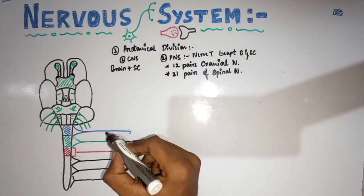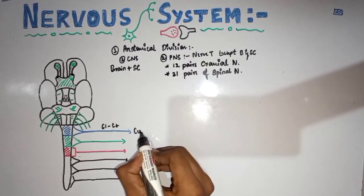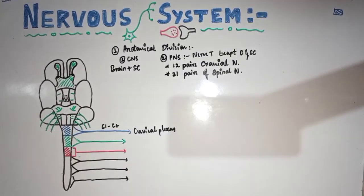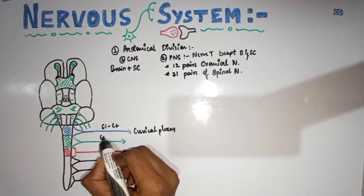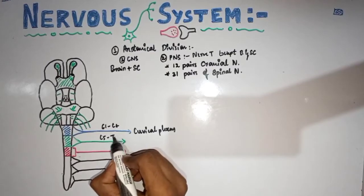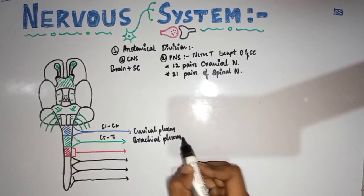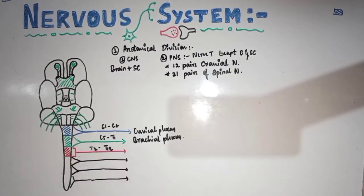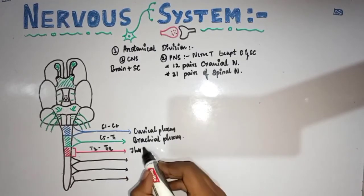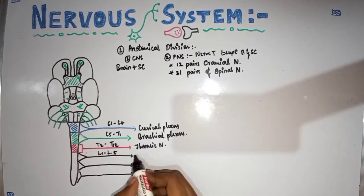From C1 to C4, spinal nerves form the cervical plexus. From C5, C6, C7, C8, and T1, these spinal nerves form the brachial plexus. A plexus is a network of nerve fibers. From T1 to T12, these are thoracic nerves. From L1 to L5, this group of spinal nerves forms the lumbar plexus.